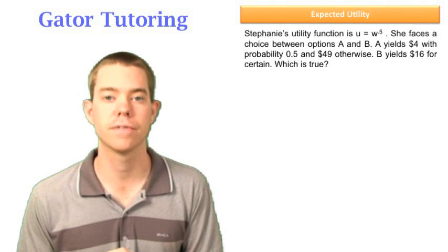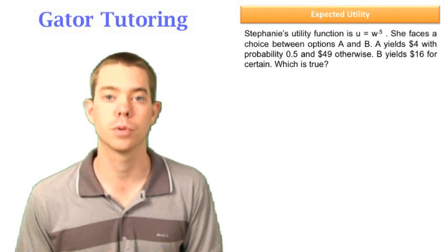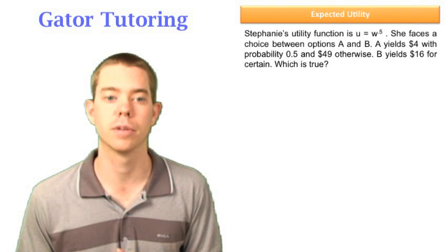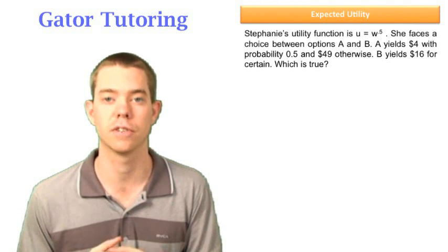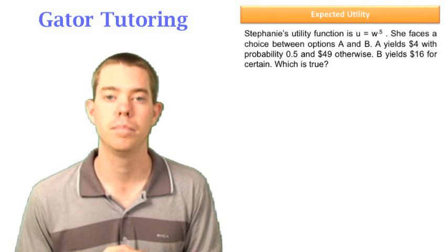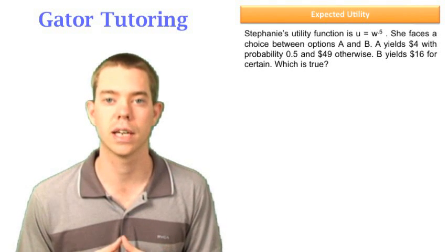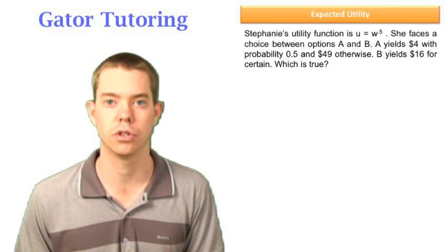It tells us that Stephanie's utility function is U equals W to the 0.5. She faces a choice between options A and B. A yields $4 with a probability of 0.5 and $49 otherwise, so a 50% chance of getting $49 as well. B yields $16 for sure. And then it says which is true and gives us different preferences that could be true for Stephanie, whether she prefers A to B or B to A or she's indifferent between the two.